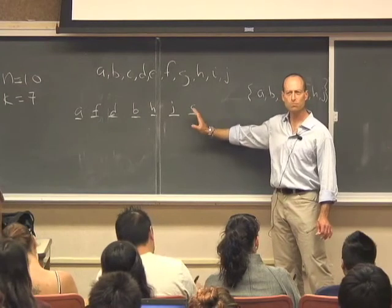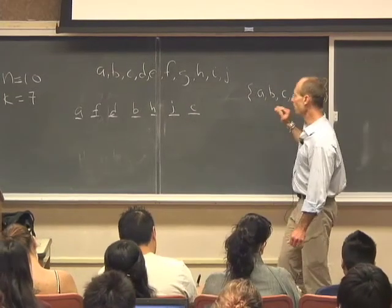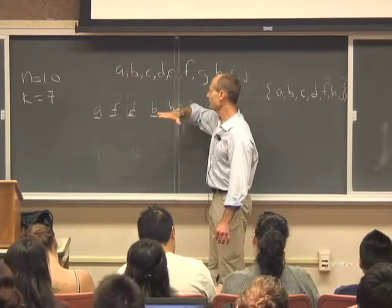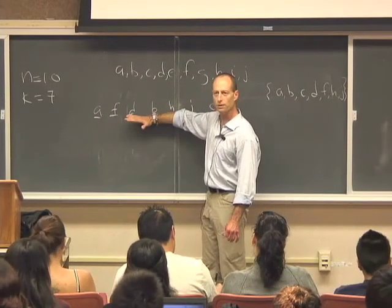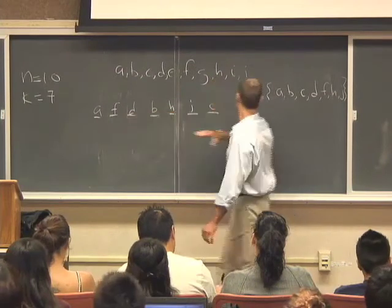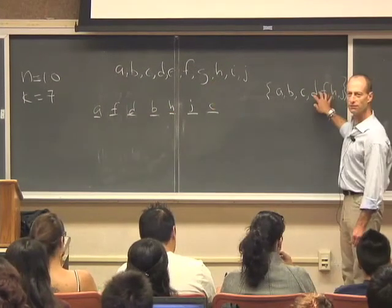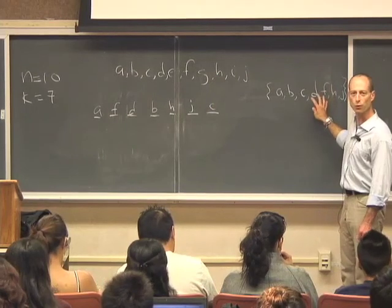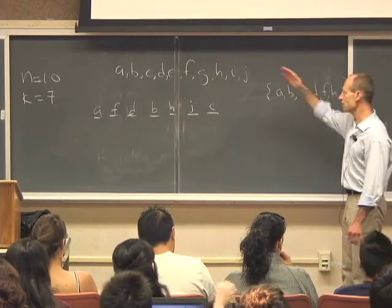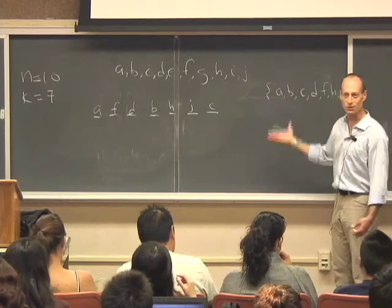So far so good? All right. So the number of ways there are of putting seven of 10 things into some order is the number of ways there are of picking seven of 10 things and then putting those seven of 10 things into some particular order. This two-stage process gives the same number of results as the one-stage process.